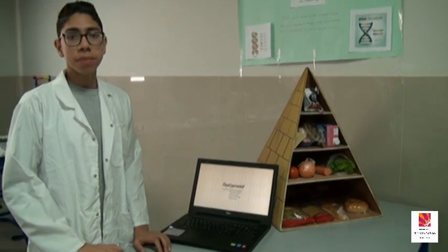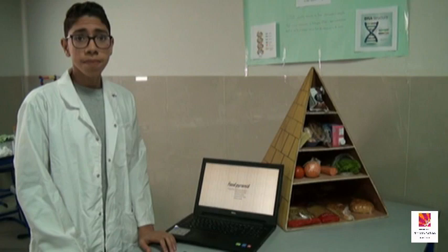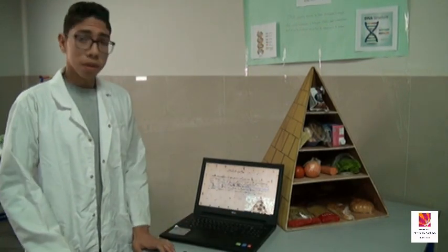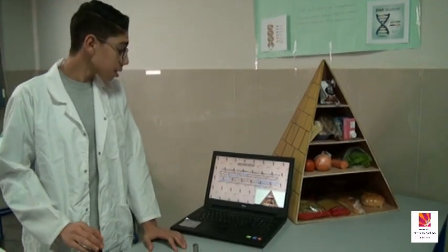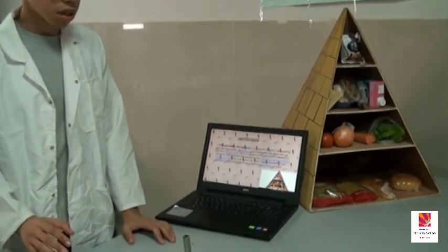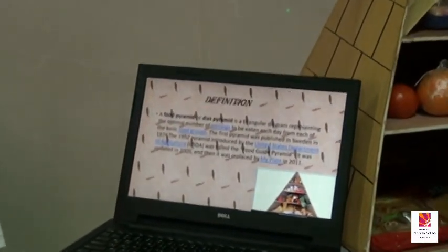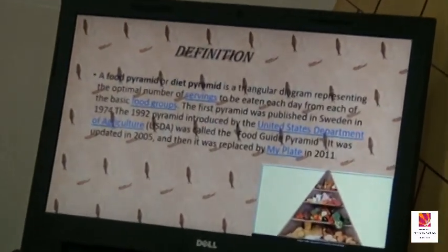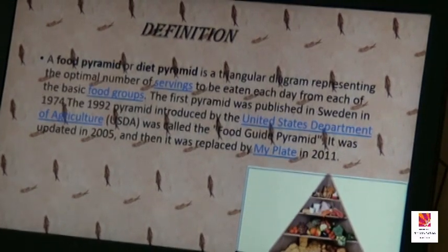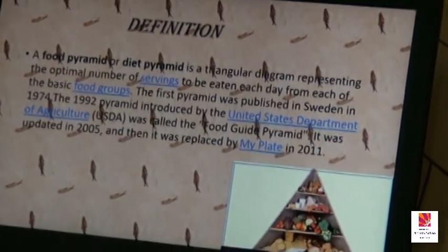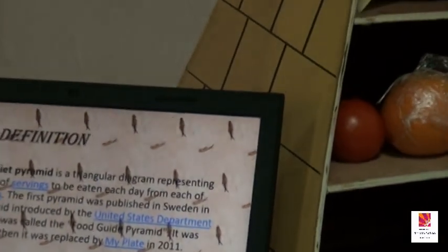Good morning respected teachers and my dear friends. Today my project is a food pyramid. First of all, what is a food pyramid? A food pyramid, or diet pyramid, is a triangle diagram representing the optimal number of servings to be eaten each day from the basic food groups. The first pyramid was published in Sweden in 1974.